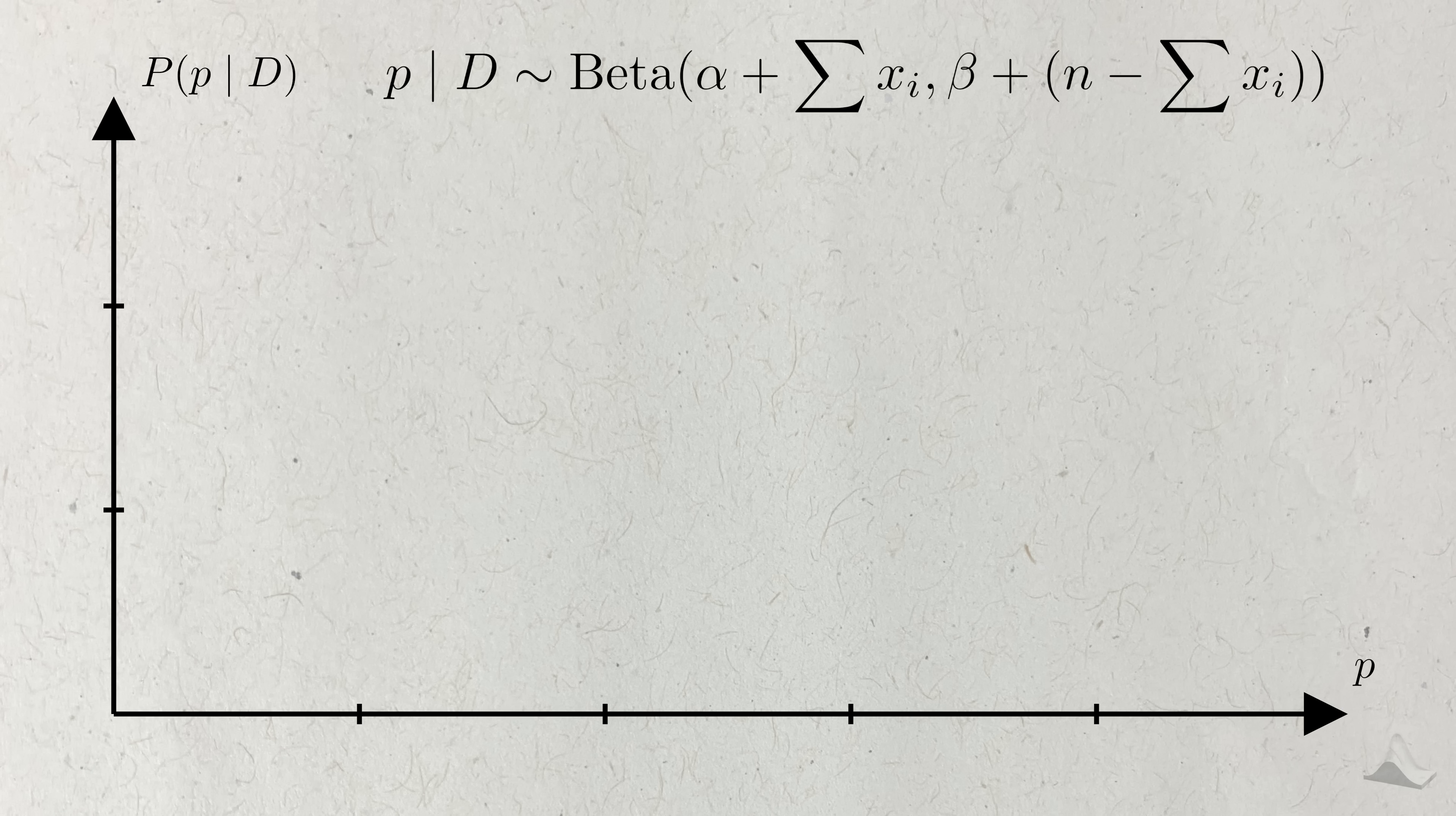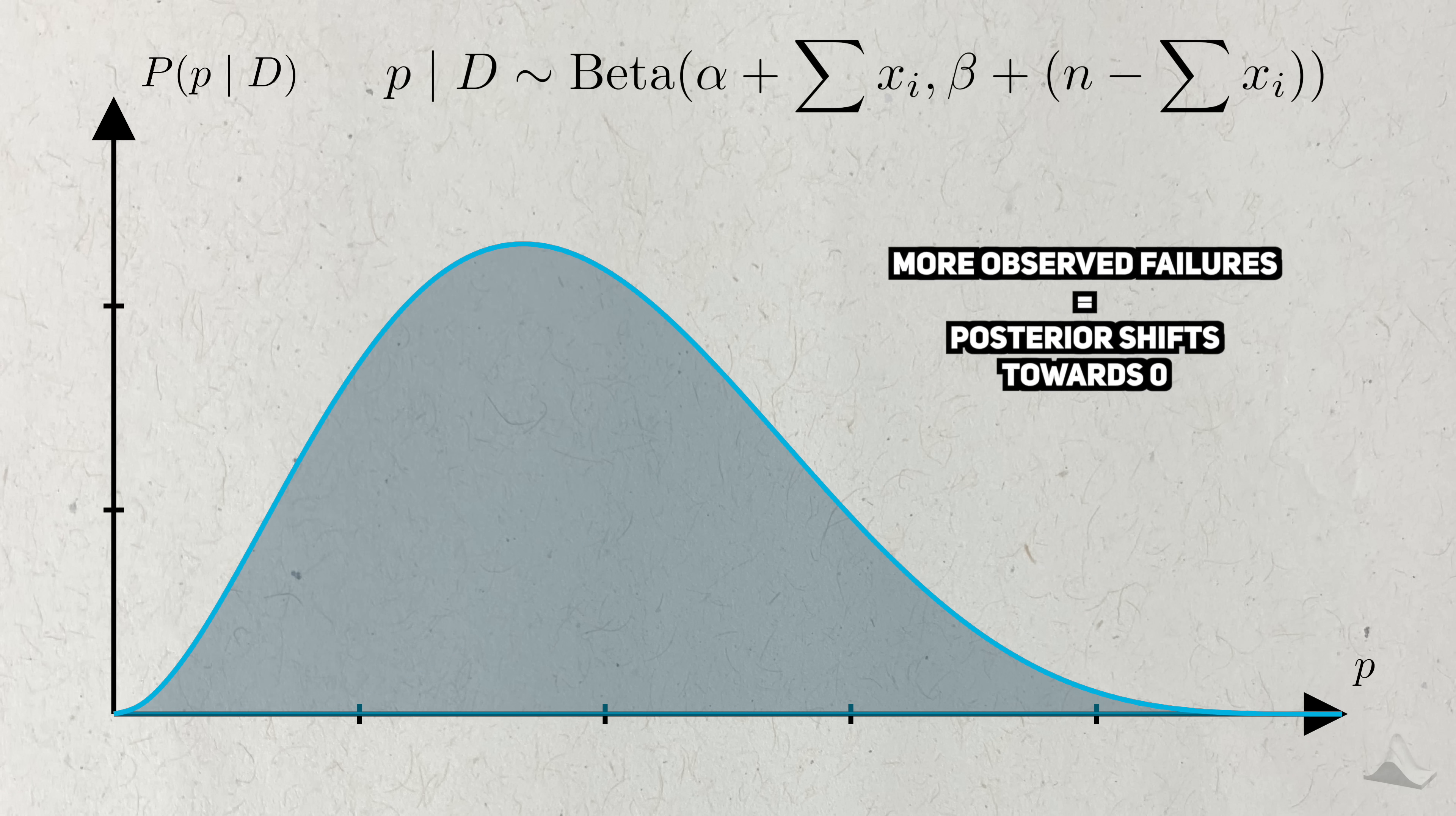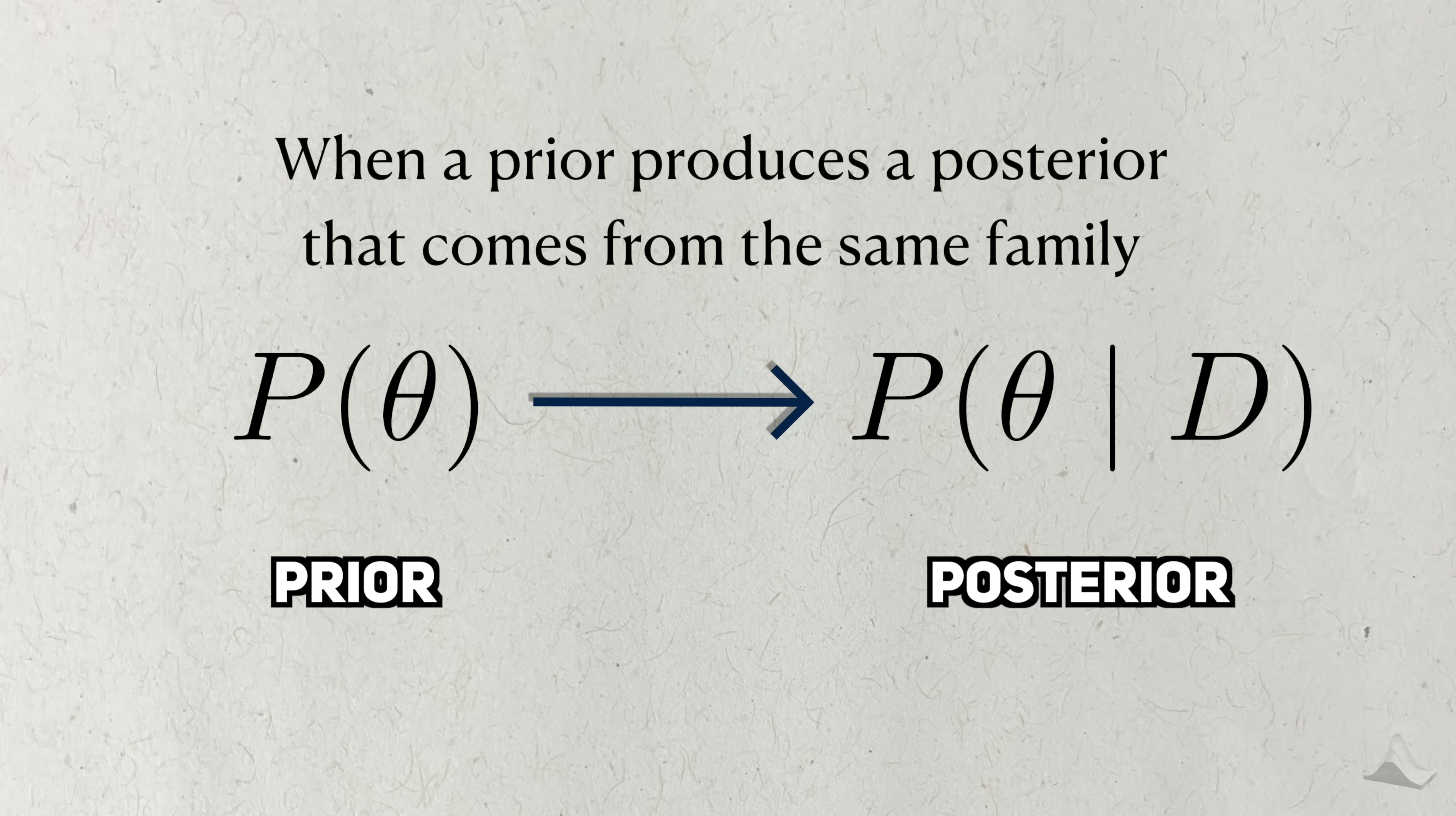In simpler terms, the more successes we see in the data, the more the posterior beta shifts towards 1. The more failures we see, the more it shifts towards 0. The end result is a posterior distribution that is informed by data. If the prior produces a posterior that comes from the same family, we refer to the prior as a conjugate prior.